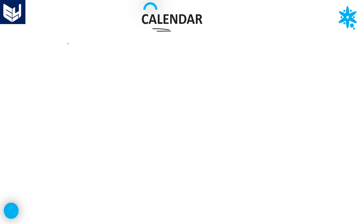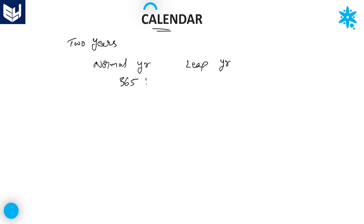In the calendar topic, basically we have two types of years. One is normal year and the second one is leap year. Every normal year consists of 365 days, whereas a leap year consists of 366 days.